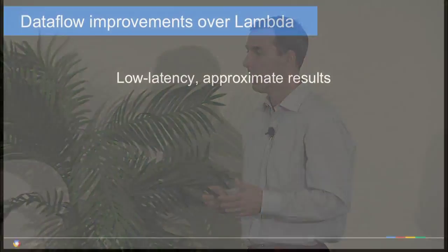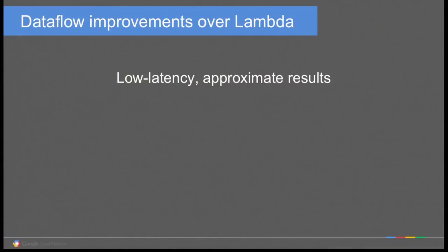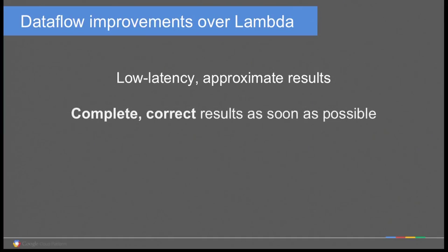So what's the benefit? You still get low-latency approximate results, just like with Lambda. Dataflow does not make events arrive any faster — if some events take time to arrive, we have to wait for them. But when they arrive, you get results based on the events that have arrived. The key difference from Lambda is that as soon as the missing events arrive, you get correct results — as opposed to waiting until tomorrow morning once your batch has run.